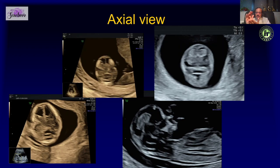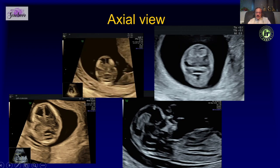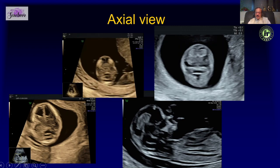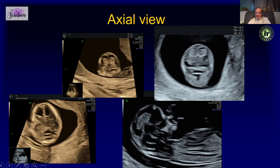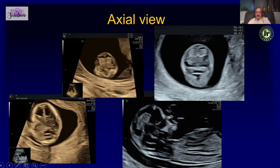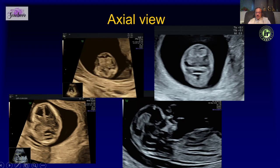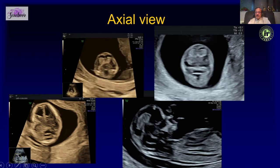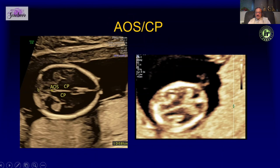Just like what you see in the sagittal plane, similar structures are seen in the posterior fossa in the axial plane — the brainstem, the IT or fourth ventricle, and the cisterna magna. This view can be very important in picking up posterior fossa abnormalities at an early stage.